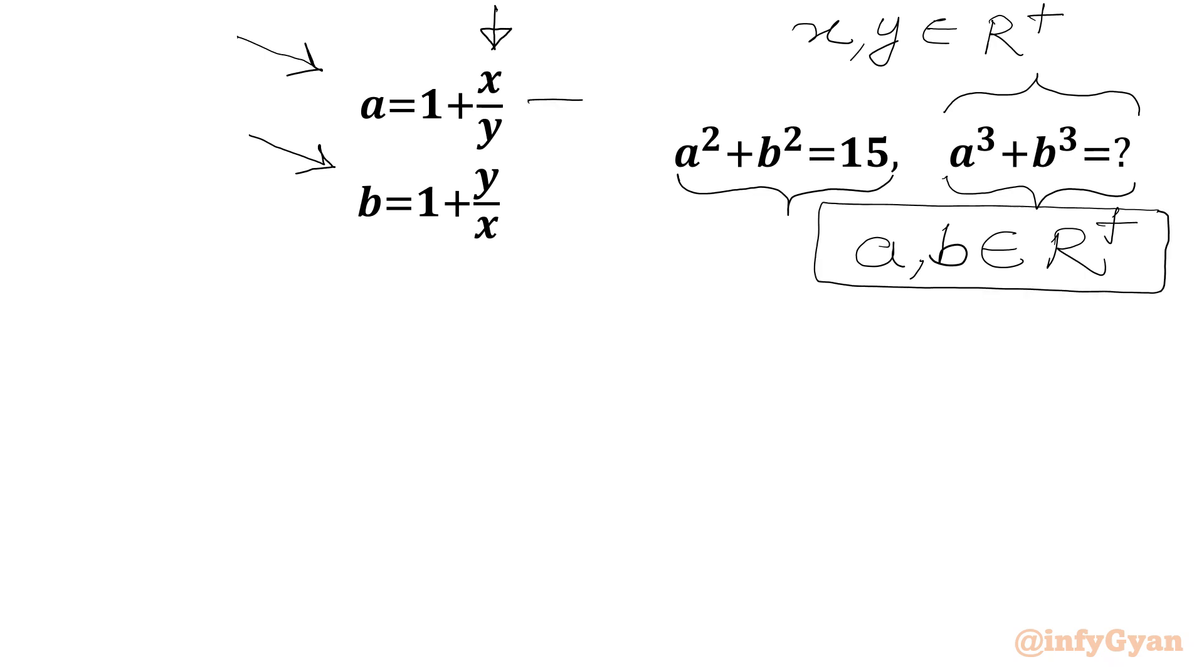Now we will consider this is equation 1. Here we will write equation 2. We are going to take this 1 to the left-hand side. Equation 1: a minus 1 equals x over y. Equation 2: b minus 1 equals y over x.